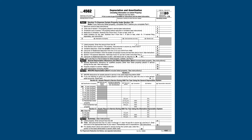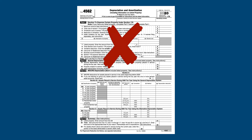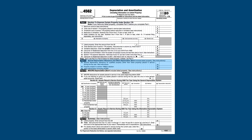These are the very basics of depreciation, and you'll notice we skipped Parts 1 and 2 of Form 4562. In the next video in this series, we'll look at ways to write off the entire cost of an asset in the first year of ownership: the Section 179 deduction, bonus depreciation, and the de minimis election.